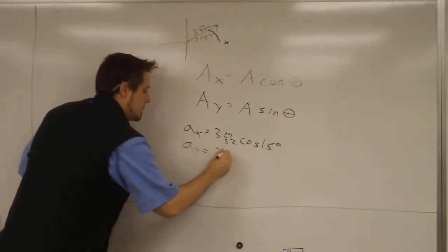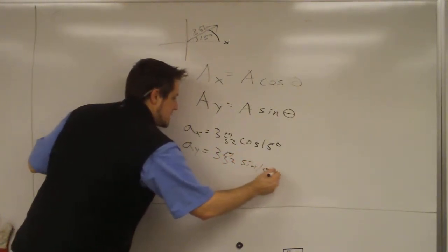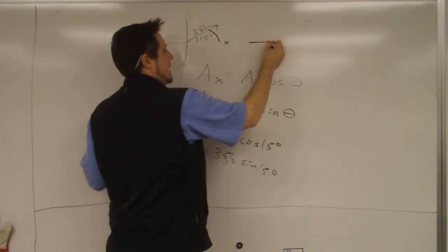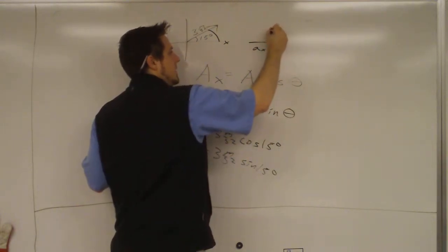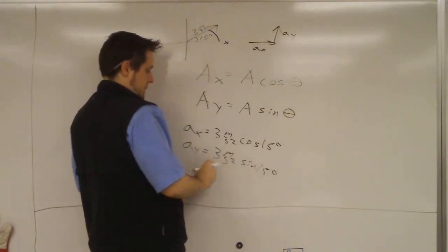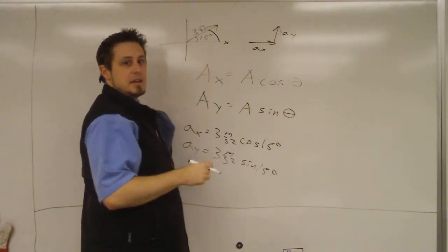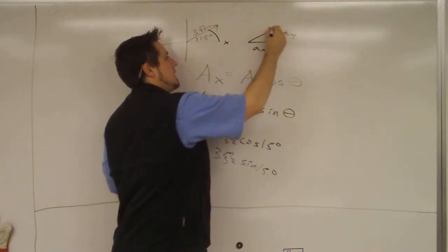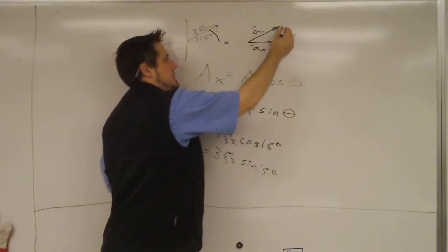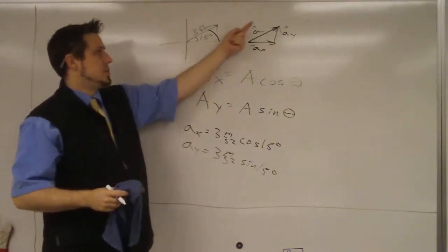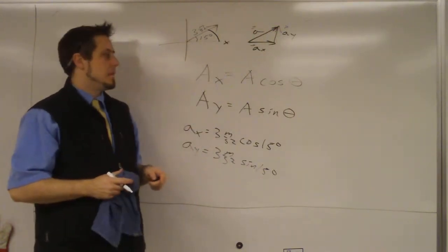A-y would be 3 meters per second squared times the sine of 15 degrees. On a picture, the x-component of acceleration has this value and the y-component has this value. If you added these two parts using the tip-to-tail rule, you'd get back the entire acceleration vector. Since it was going up and to the right, the x-part goes right and the y-part goes up.